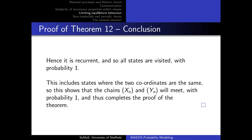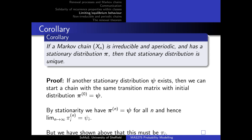A nice corollary is that if there is a stationary distribution, it is unique. To see this, take another stationary distribution ψ and start the chain with initial distribution ψ. Since ψ is stationary, the distribution at any time n is ψ. But by Theorem 12, this must also converge to π. Since a constant sequence converges, ψ must equal π, showing uniqueness. To recap: if the chain is transient, there's no stationary distribution; if there is one, it's unique and the chain converges to it.